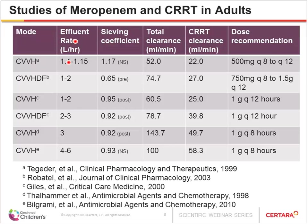As each study had higher effluent rates prescribed, the CRRT clearance of meropenem increased as expected, contributing to increasing total clearance accounting for both endogenous and extracorporeal clearance. Based on those results, very different dosing regimens were suggested, ranging from 500 mg every 12 hours to 1 gram every 8 hours. The summary is that CRRT dosing and prescription differences affect PK and influence what an appropriate dose would be.